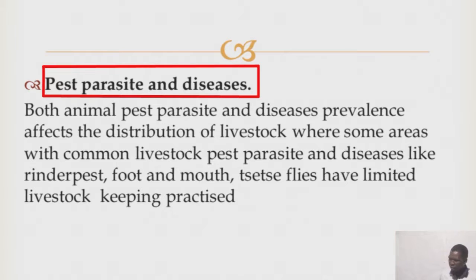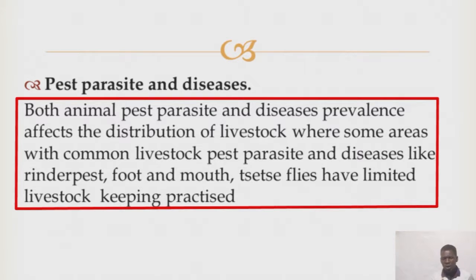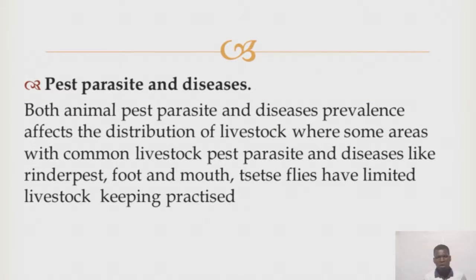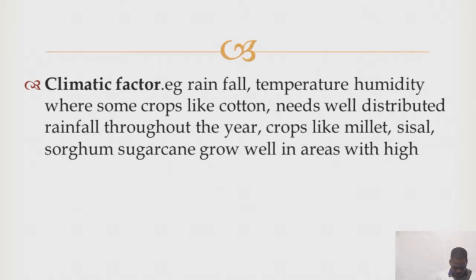How does this affect the distribution of livestock and crops in East Africa? You find that in areas where there is prevalence of serious livestock or crop diseases, very few livestock and crops will be grown in certain areas.